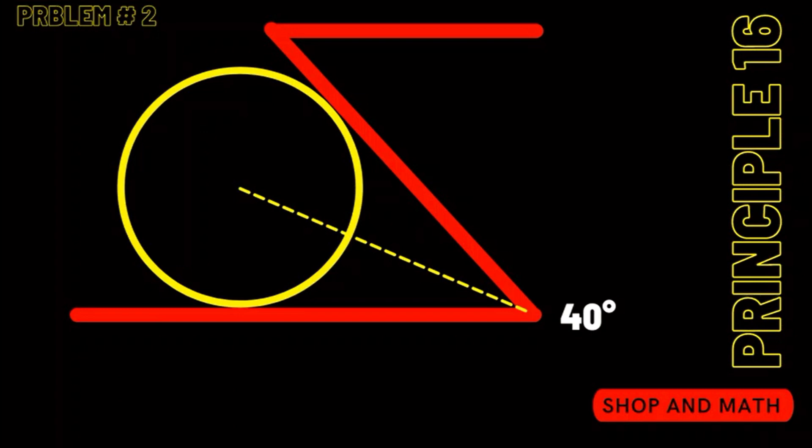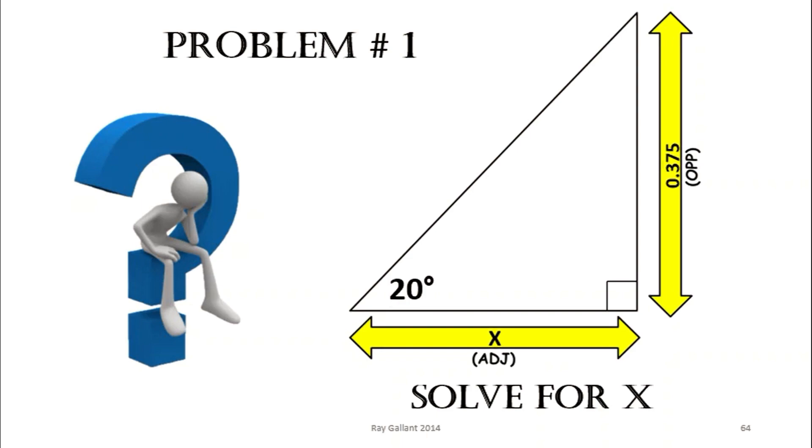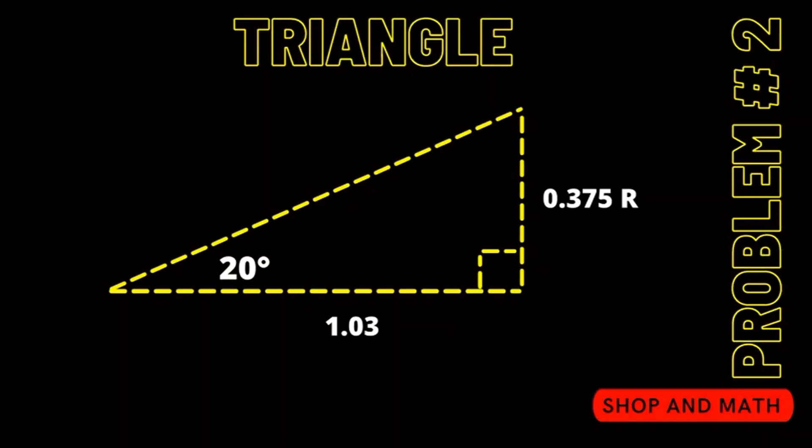You always want to bisect the angle. So we have our 40 degrees. We bisect that angle. We come up with our 20 degrees. We draw our line. We draw our line perpendicular. So we have our triangle 20 degrees 3 eighths of an inch or 0.375. We're going to use the same trig. We come up with 1.03.